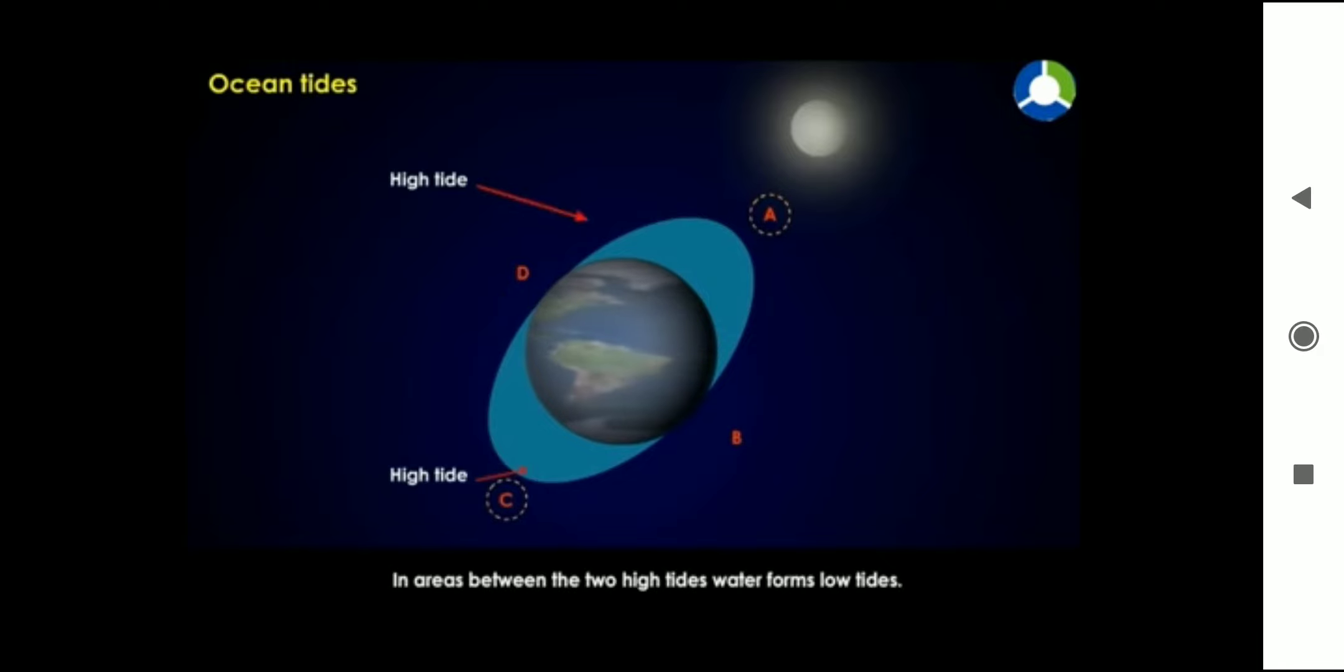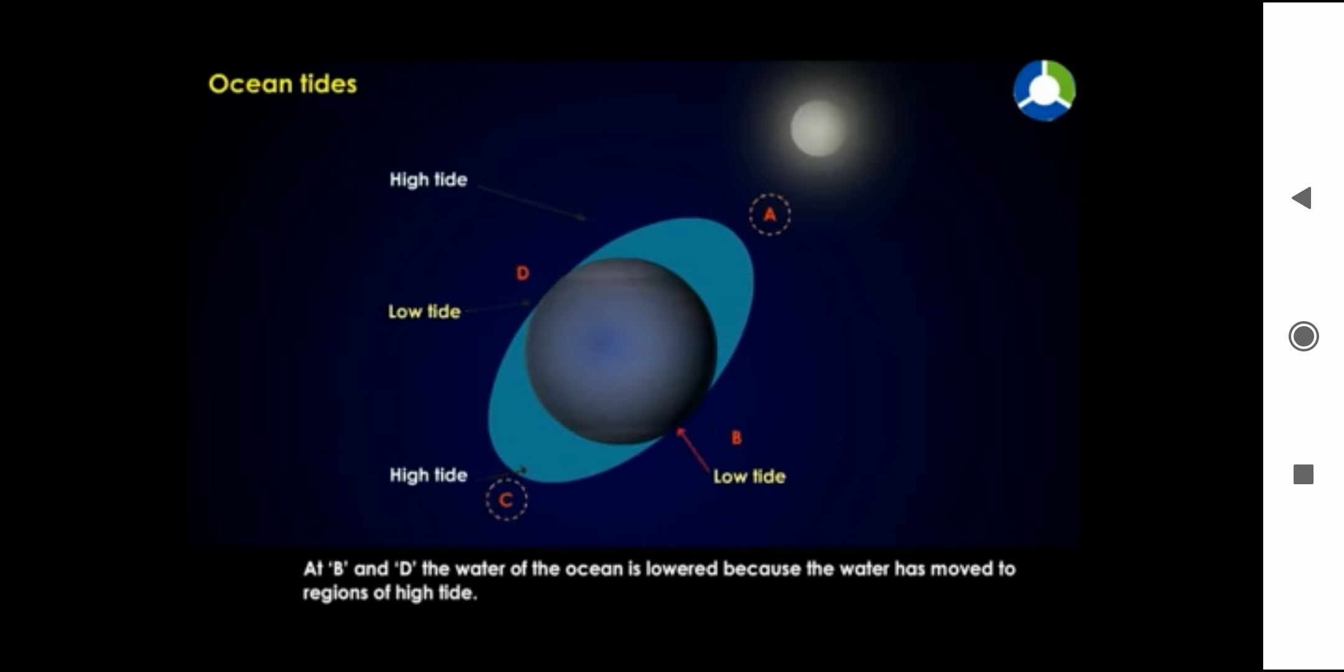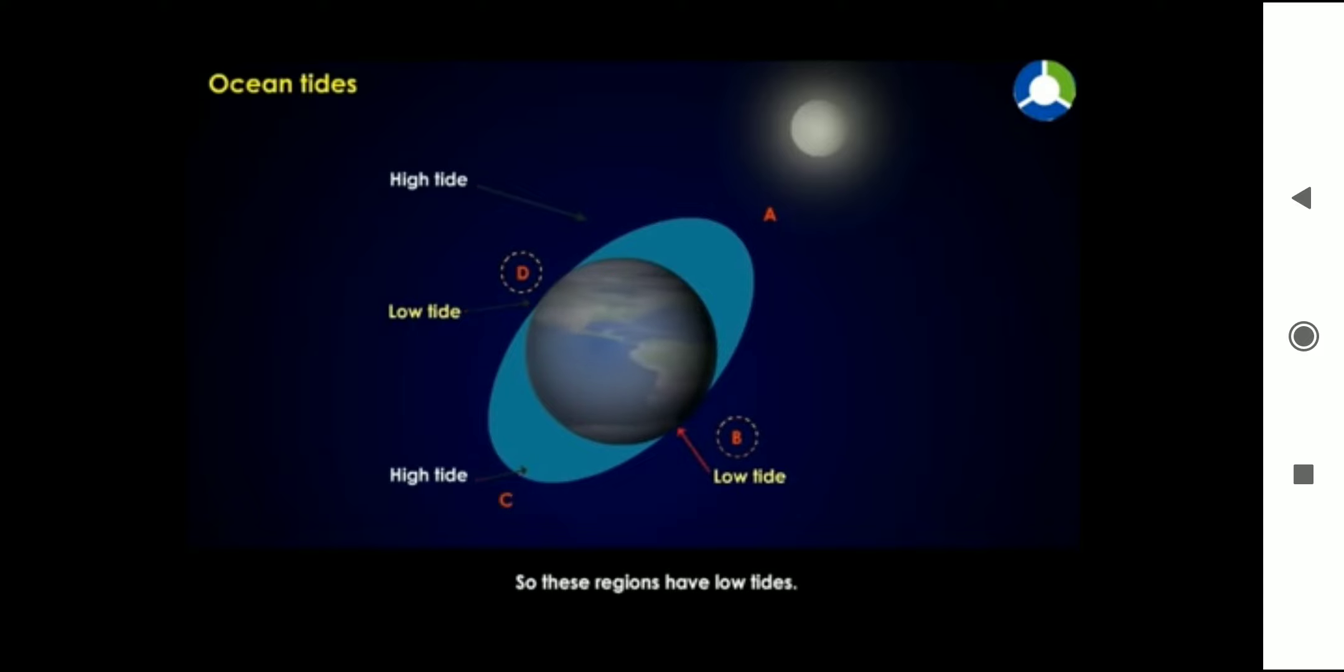In areas between the two high tides, water forms low tides. At points B and D, the water of the ocean is lowered because the water has moved to regions of high tide.